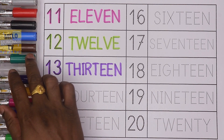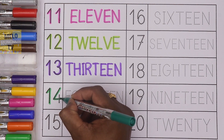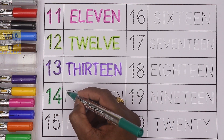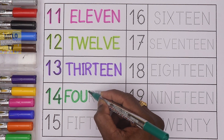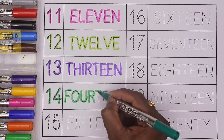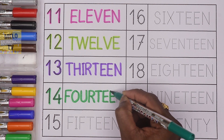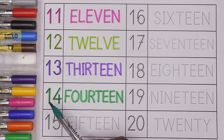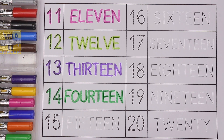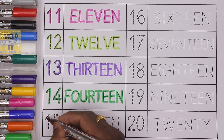Next I'll take dark green color — this is dark green color — to write the number 14. 1, 4, 14. And the spelling is F O U R T E E N. 14. So this is number 14: 1, 4, F O U R T E E N, 14.